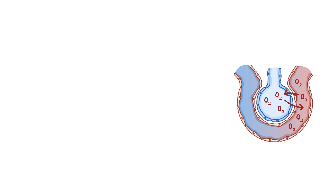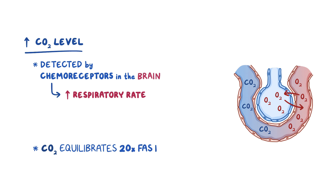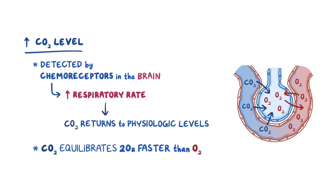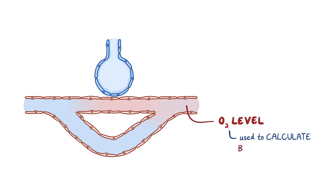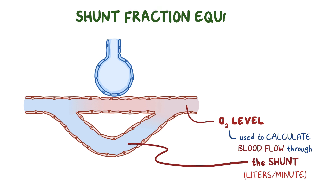On the other hand, if there's even a slight rise in carbon dioxide levels, it's detected by central chemoreceptors in the brain, which promptly increase the respiratory rate. Carbon dioxide in the alveoli and blood equilibrates about 20 times faster than oxygen, so unlike oxygen exchange, which is physiologically maxed out, any excess carbon dioxide can quickly diffuse out of the blood and return to normal physiologic levels. In fact, it's the decrease in oxygen levels that can actually be used to calculate the amount of blood flow through the shunt, in liters per minute, using the shunt fraction equation.